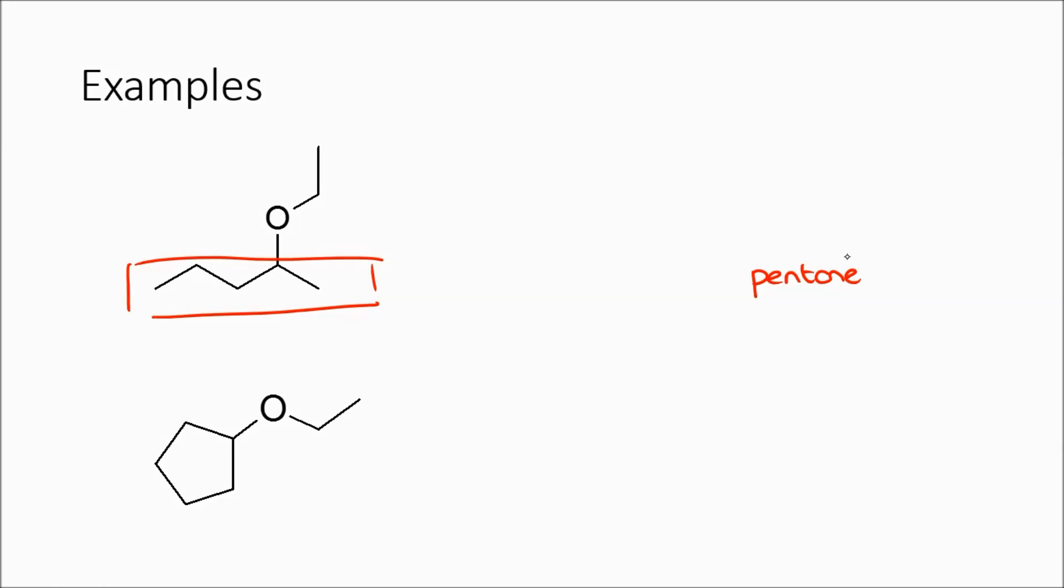And then here, I have an ethoxy group, because I've got two carbons here. This is in the two position - let's count up these carbons, number them. So I have it in the two position. It's 2-ethoxypentane.